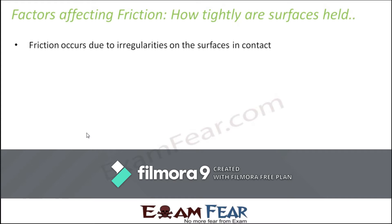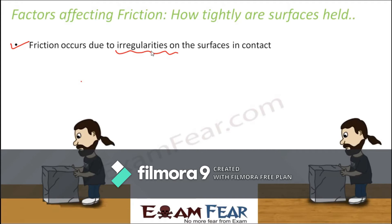Friction occurs due to irregularities on the surfaces in contact. Let us take an example. Suppose you have a box and you try to move it first on a smooth surface and then on a rough surface. You find it easier to move the box on the smooth surface because the friction is less, so you do not need to apply a lot of force since the opposing force is less.